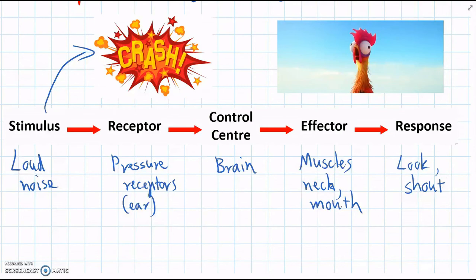So the key for the stimulus response model is these arrows help us to show that it's a step-by-step process. And we always start with the stimulus that's detected by the receptor. The receptor sends a message to the control center, the control center sends a message to the effector, and then that causes the response.